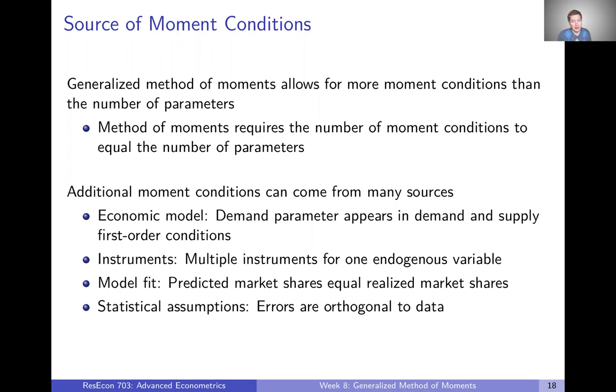Well, it might be that your demand parameter, like a demand elasticity, appears in both the demand and the supply first order conditions. So then you're going to have one parameter showing up in two different moments. And so it's possible you could end up with some extra moments through something like that.